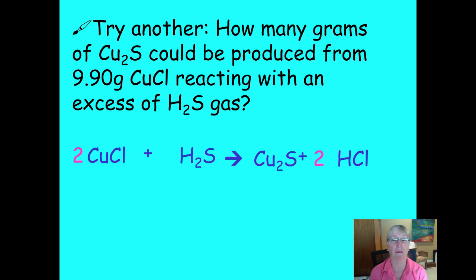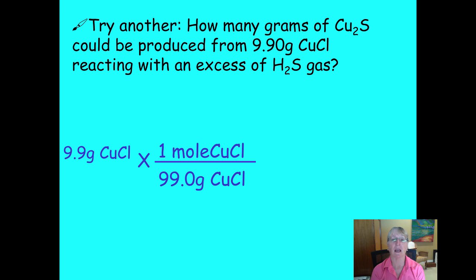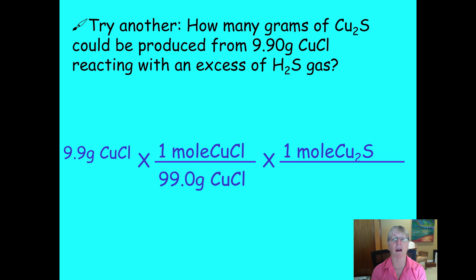Go back and look at the problem — what were you given, what were you asked for? The 9.9 grams of copper chloride is your entry number. Write what you know: 9.90 grams of copper chloride. You can never use grams directly in a molar ratio, so the next conversion factor converts grams into moles. The molar mass of copper chloride is 99 g/mol from the periodic table — the mass of one mole of Cu and Cl. Next, convert to moles of copper sulfide.